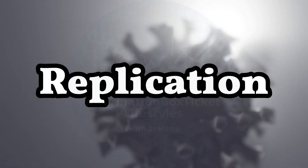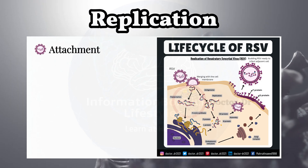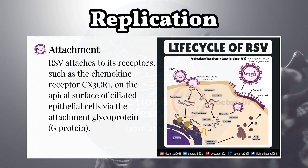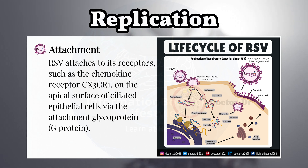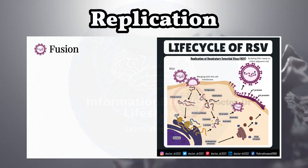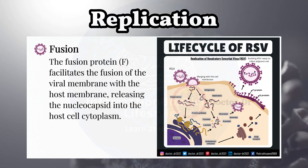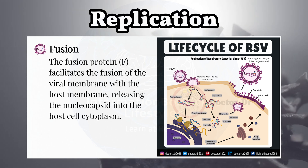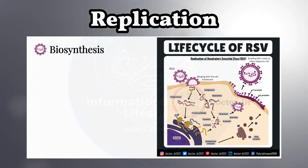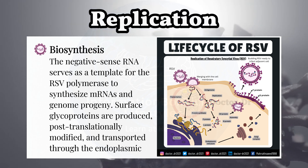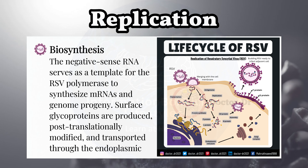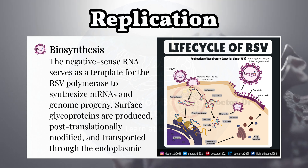Replication of Respiratory Syncytial Virus (RSV). Attachment: RSV attaches to its receptors, such as the chemokine receptor CX3CR1, on the apical surface of ciliated epithelial cells via the attachment glycoprotein G. Fusion: The fusion protein F facilitates the fusion of the viral membrane with the host membrane, releasing the nucleocapsid into the host cell cytoplasm. Biosynthesis: The negative-sense RNA serves as a template for the RSV polymerase to synthesize mRNAs and progeny genomes. Surface glycoproteins are produced, post-translationally modified, and transported through the endoplasmic reticulum to the host cell membrane.